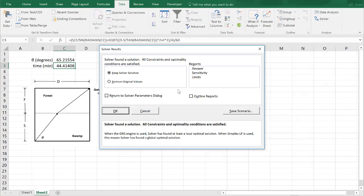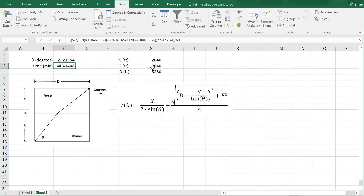And I press solve, and it turns through and finds a solution. So with these particular parameters, the convict should choose an angle of 65 degrees to get through the swamp and the forest. And again, the swamp, he can travel 2 feet per second, and in the forest, he can travel 4 feet per second. And that's where we get the 2 and the 4 from.